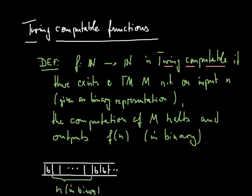So this means that when I start running the Turing machine M on this configuration, so this tape contents that is N written in binary on the tape and blanks to the left and to the right of it, and the read-write head pointed to the cell immediately to the left of the input, then the Turing machine starts running.